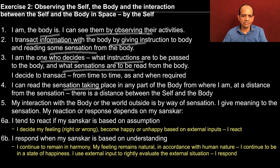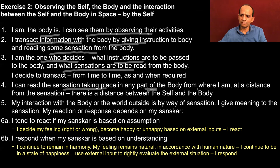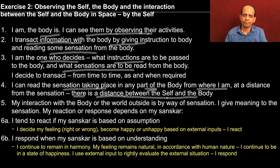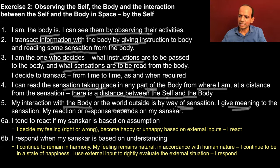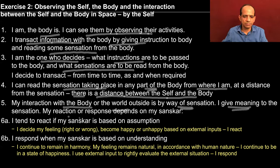I can read the sensation taking place in any part of the body. And as we could see, there are sensations in every part of the body, every cell of the body. But I read sensations decisively, when I consider them important, and I can read them being at a distance from the sensation. We could also conclude that there is a distance between the self and the body. In step 5, you could see that my interaction with the body or the world outside is by way of sensation, and I give a meaning — I associate some meaning to every sensation. My reaction or response depends on my sanskar, the way I associate the meaning.